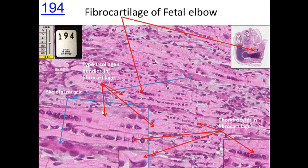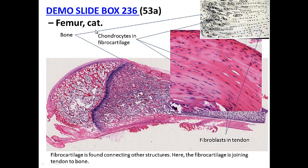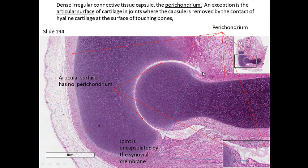Looking again at the fetal elbow, at the attachment we can see large bundles of collagen with chondrocytes stacked up in their lacunae — these are the chondrocytes of the fibrocartilage. This is type 1 collagen from the tendon or ligament, and you can also see skeletal muscle where the muscle will eventually attach to the tendon so that skeletal muscle regulates bone location. In a cat section, you can see fibroblasts of the tendon, chondrocytes in their lacunae in the fibrocartilage, adjacent to where bone is attaching to the tendon.